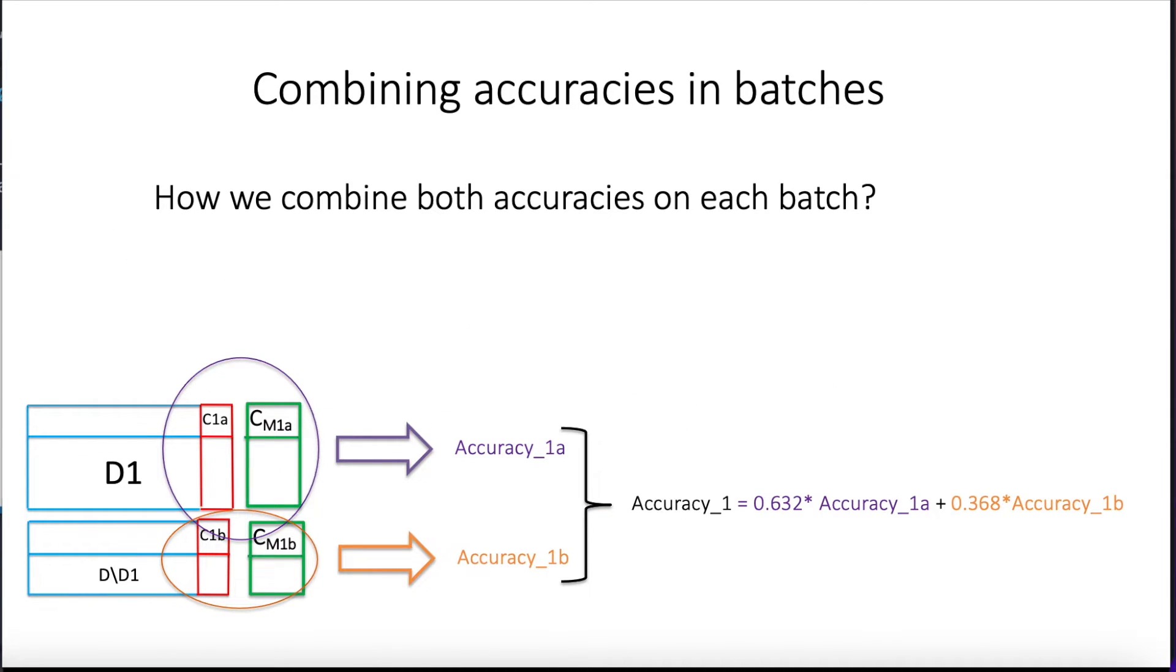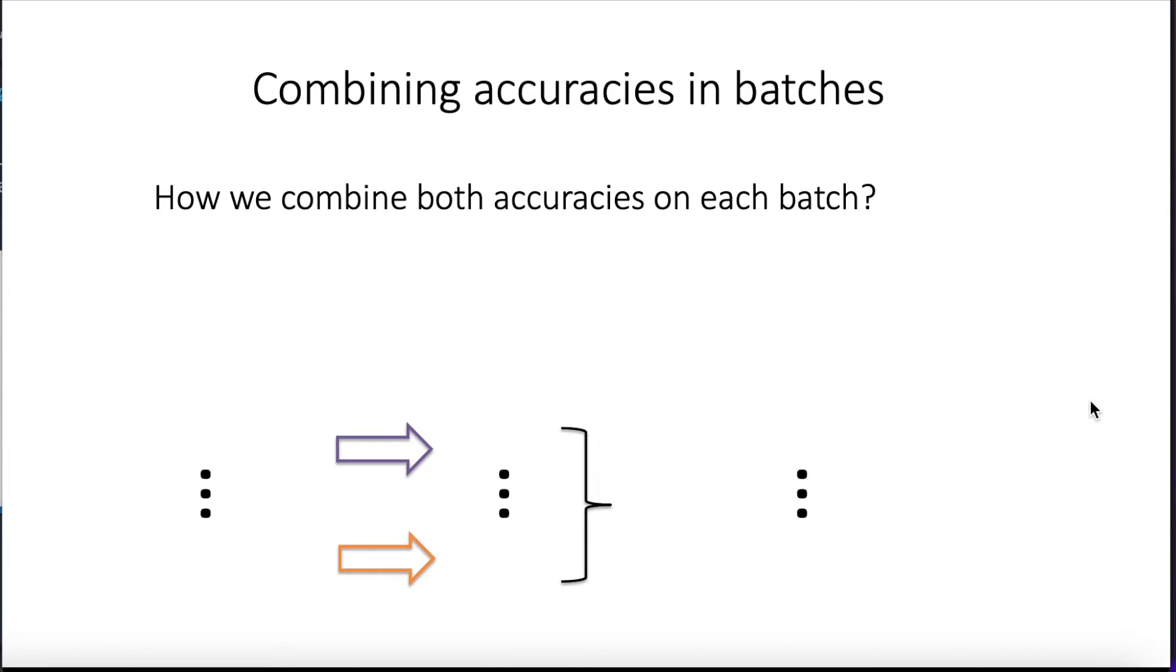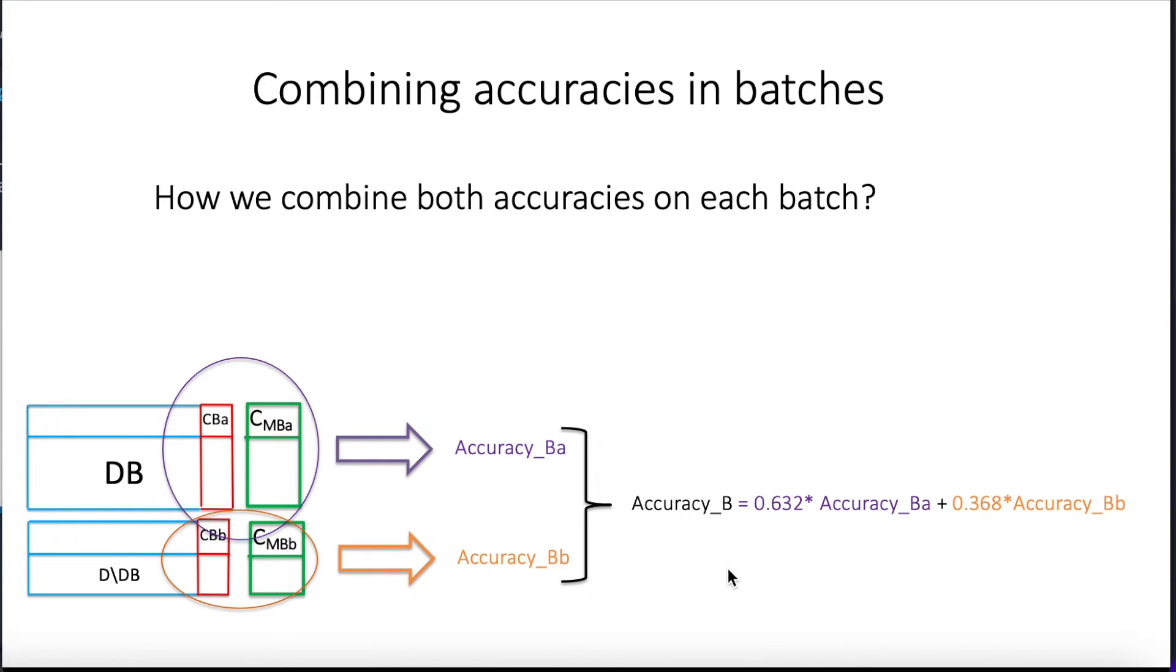Well, what we do is we obtain a weighted average. So I'm going to explain why these specific numbers. So in the first round, we combine both with this weighted average, same thing for round 2, and so on, until round B. We combine both accuracies into one accuracy.